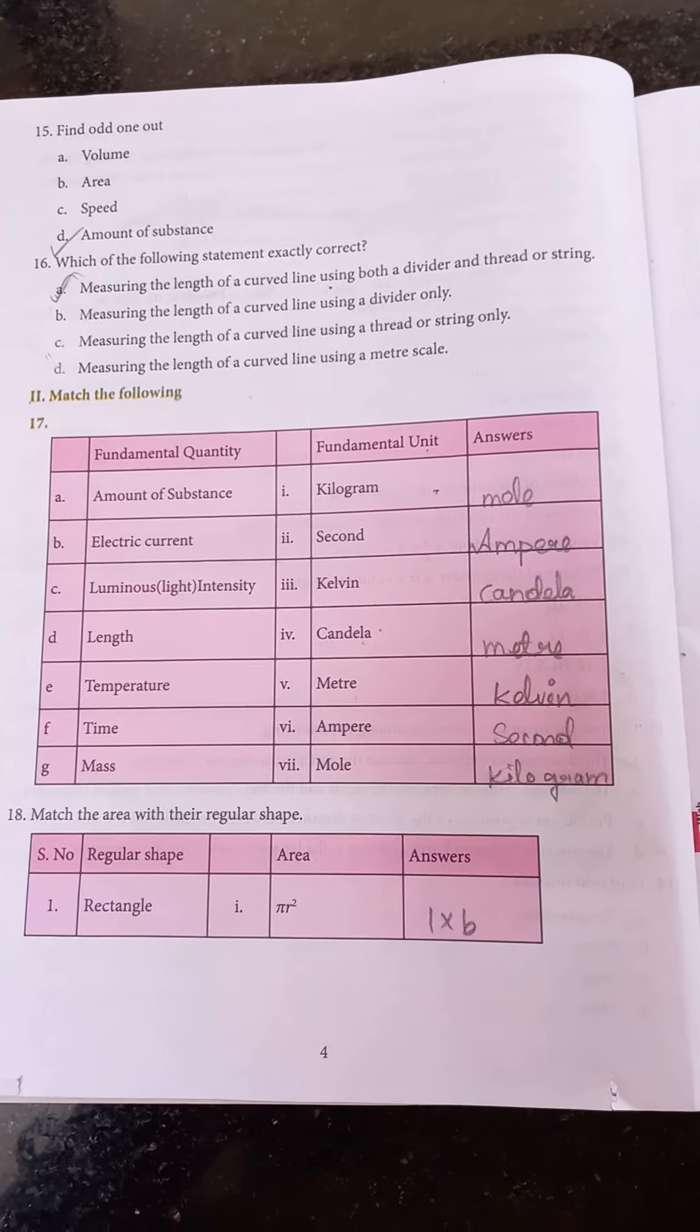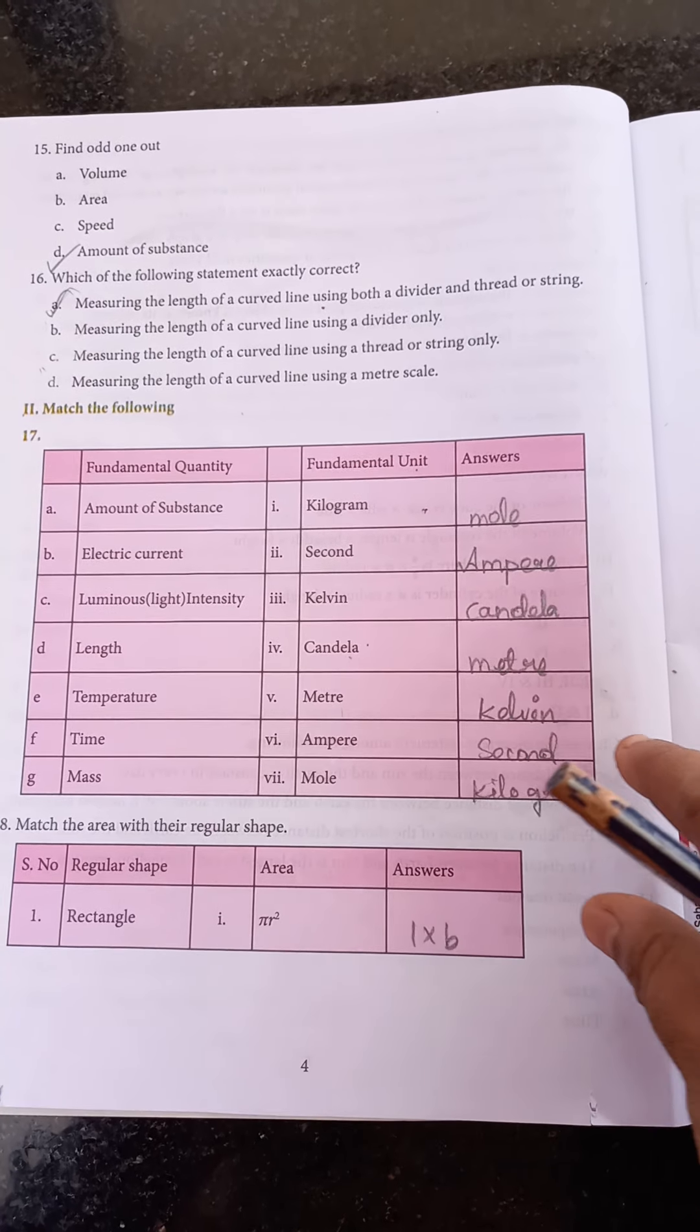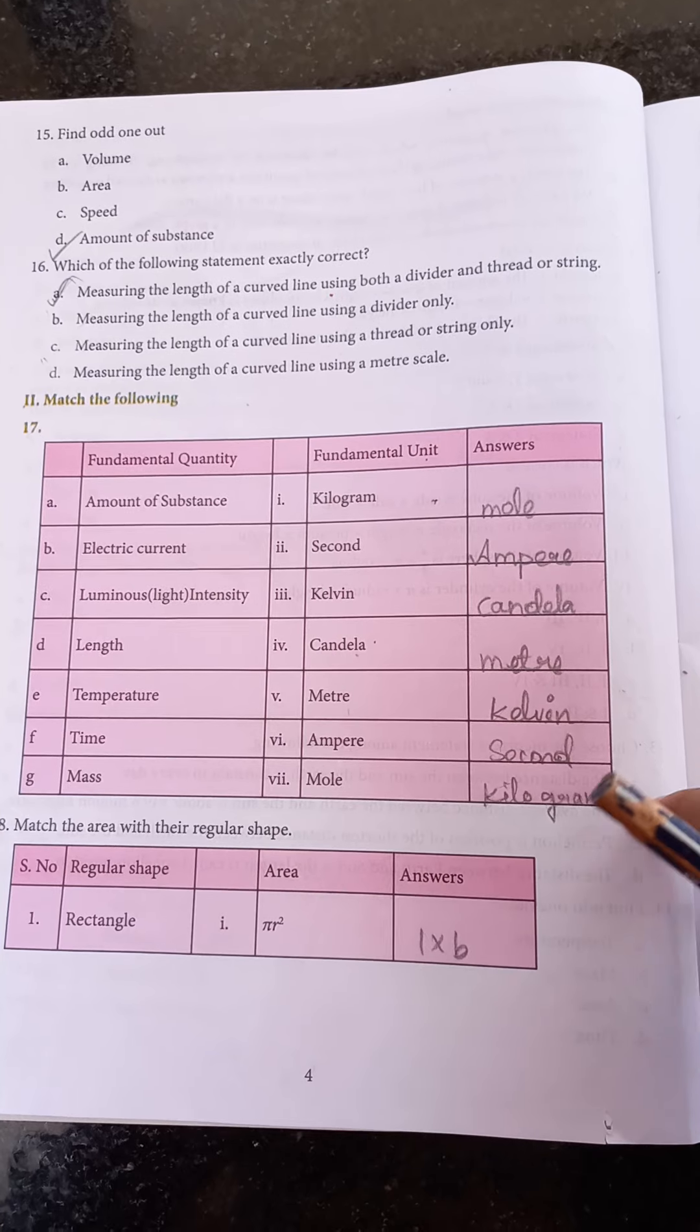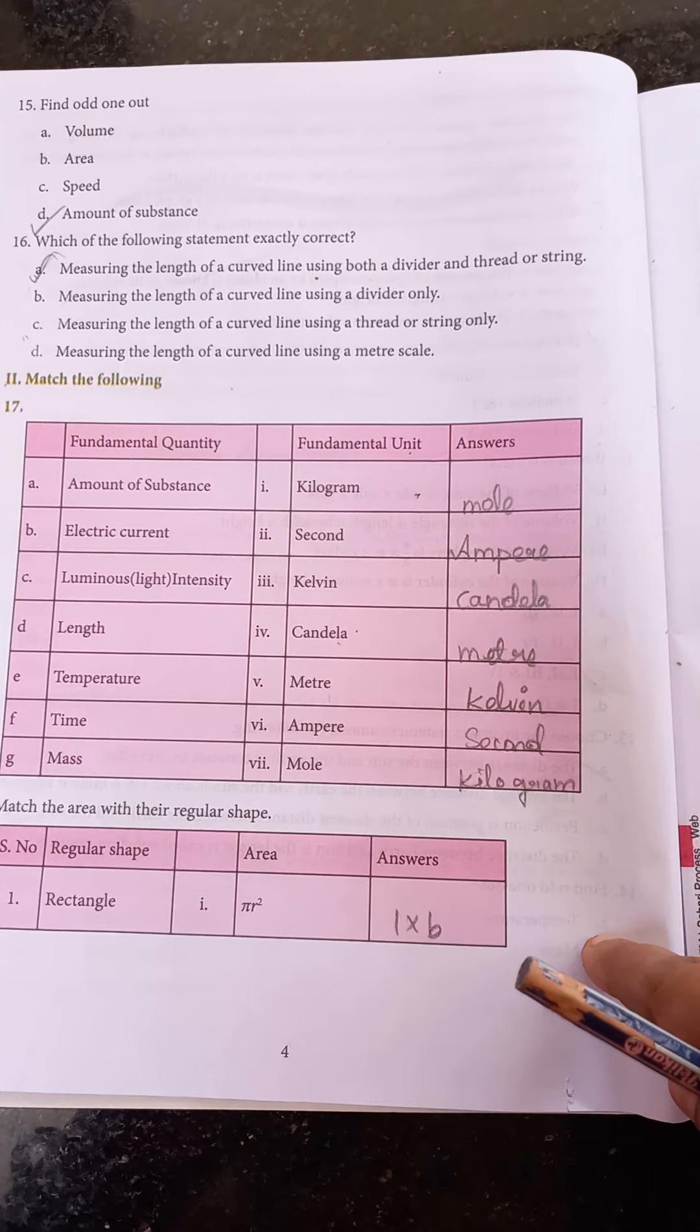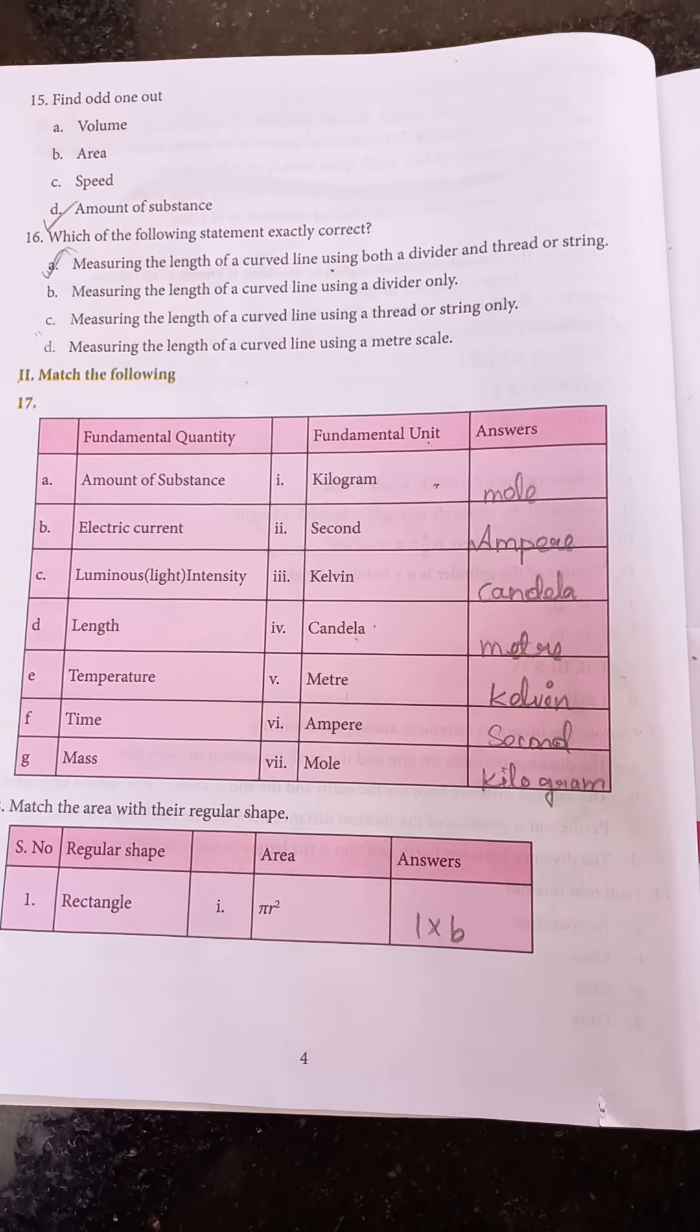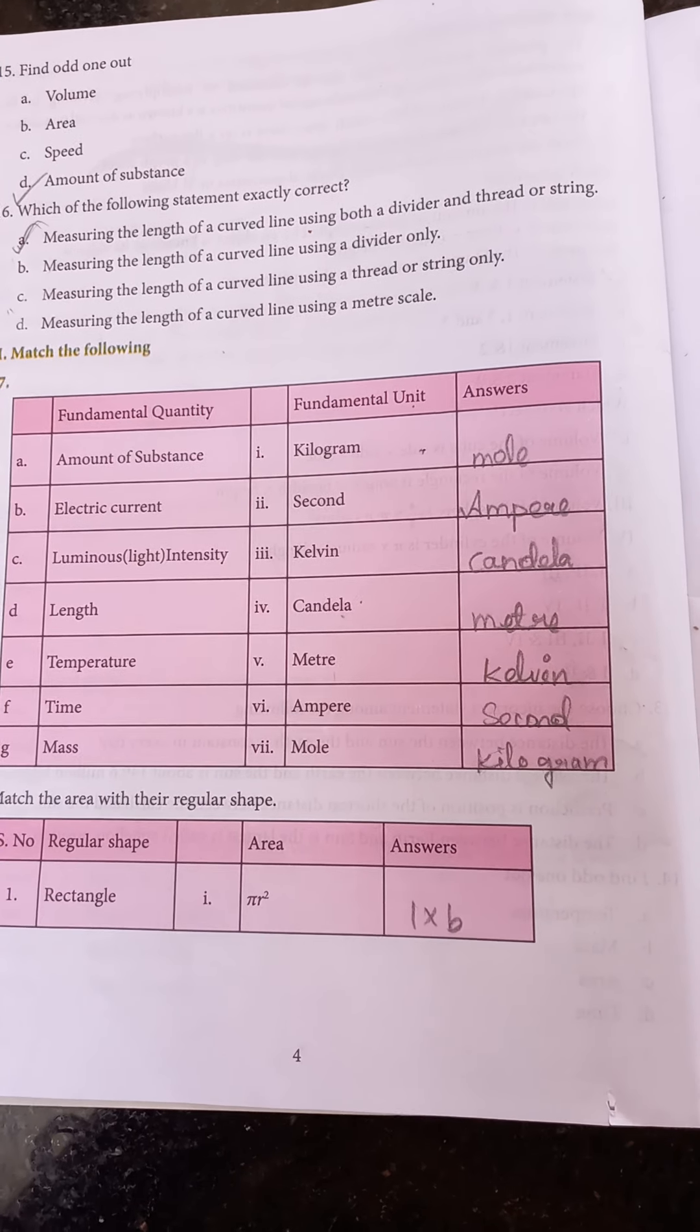Roman number 2: match the following. Question number 17, fundamental quantities are given, fundamental units also given. Amount of substance, the fundamental unit is mole. Electric current, the unit is ampere. Luminous intensity, candela. Length, meter. Temperature, Kelvin. Time, second. Mass, kilogram.